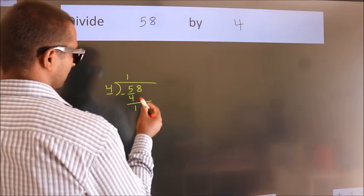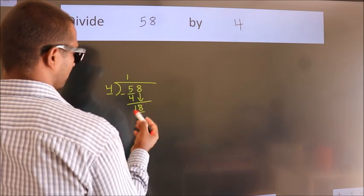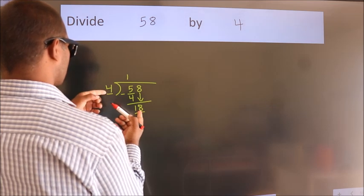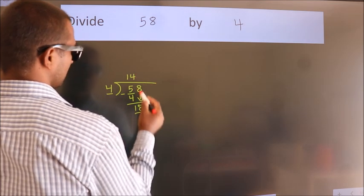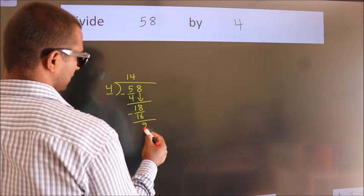After this, bring down the beside number. So 8 down. So 18. A number close to 18 in the 4 table is 4 fours 16. Now we subtract. We get 2.